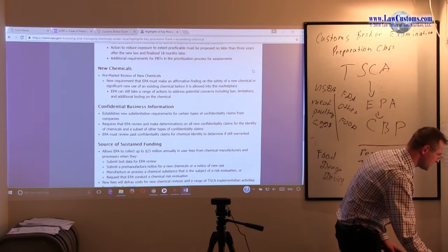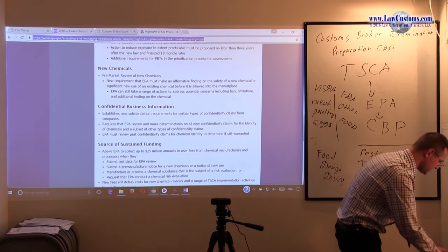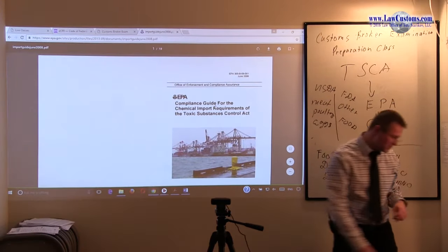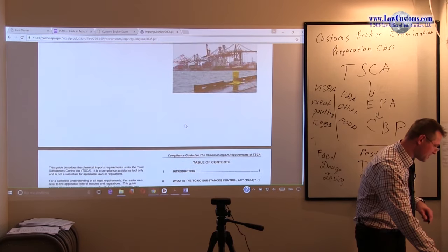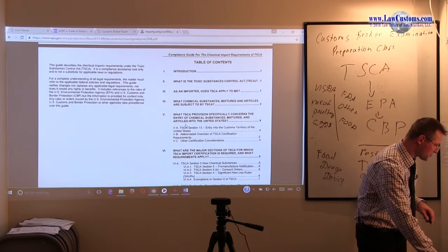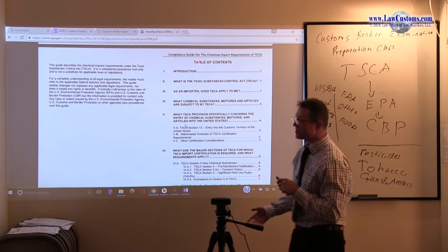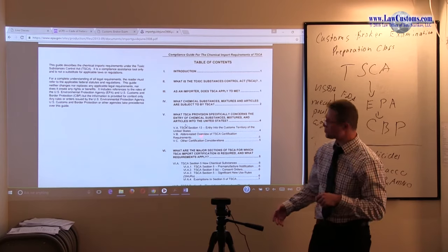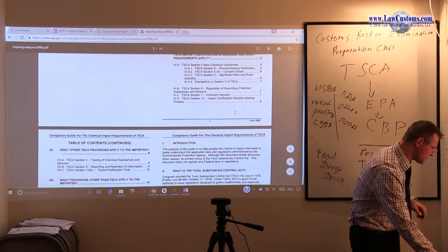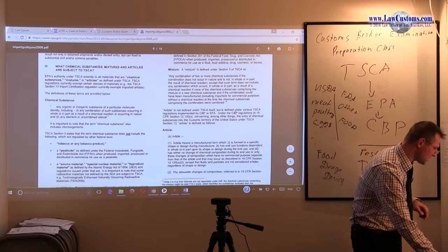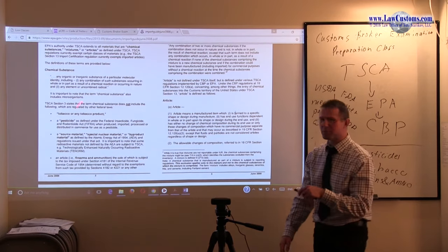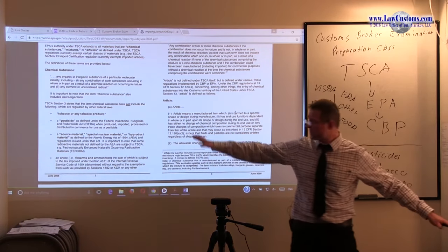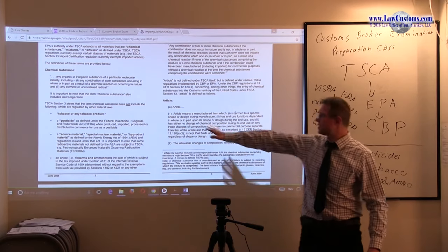Back in 2008, Customs and Environmental Protection Agency made an effort by publishing a compliance guide for chemical import requirements under the Toxic Substances Control Act. It's not a very large document, only about 18 pages, and a lot of the stuff is condensed. It gives you ideas such as those exceptions we went through. It breaks them down in a more neutral fashion and pretty much goes over the stuff that one must do under the Toxic Substances Control Act.